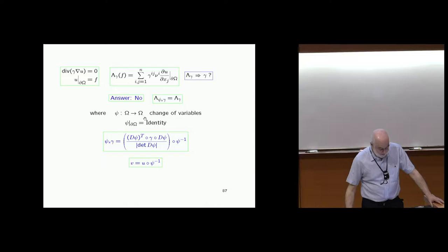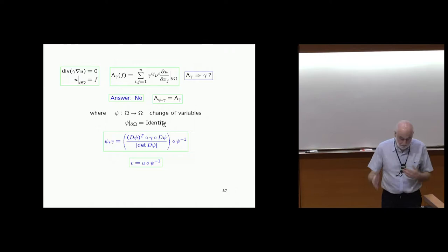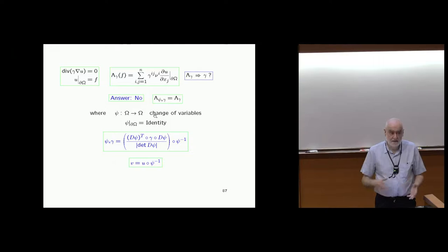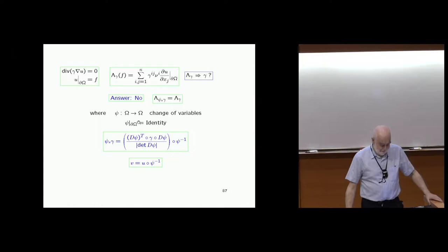The group of diffeomorphisms — changes of variables that are the identity at the boundary — is a group: composing two such maps gives another one that is also the identity at the boundary. It is infinite-dimensional. Any rotation inside that leaves the boundary fixed is an example.